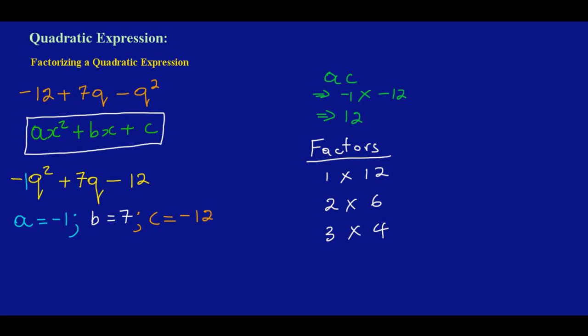So by process of elimination, I know if I add 1+12 I'll get 13, so I can cancel that. And again if I add 2+6 I'll get 8, so I can cancel that because none of those two will give me a positive 7. However, I will note that if I add 3+4 I will get my 7, which is b, so I'm going to use that factor.